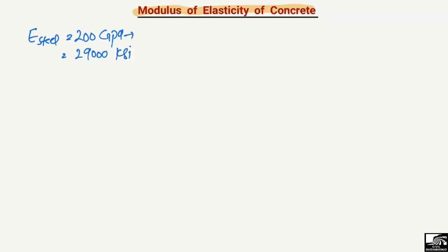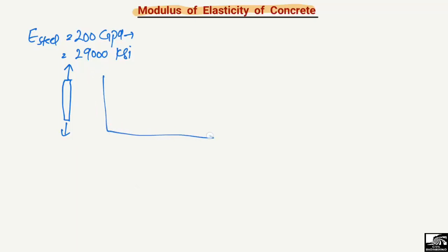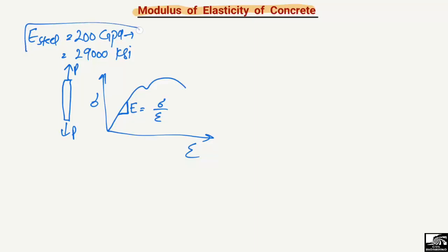If we have a steel bar and apply tension on both sides and plot the stress-strain curve, we get a graph like this. We find the slope of the curve, which is stress divided by strain — that is the modulus of elasticity. For steel, this value is 200 GPa. Concrete, however, shows slightly different behavior, and different codes specify different values for its modulus of elasticity.